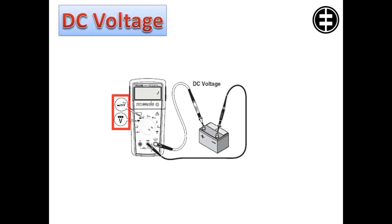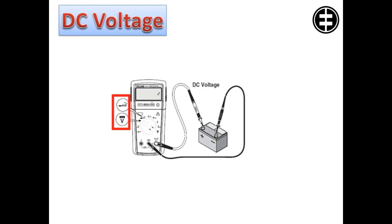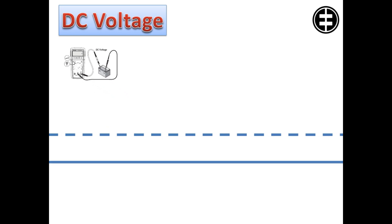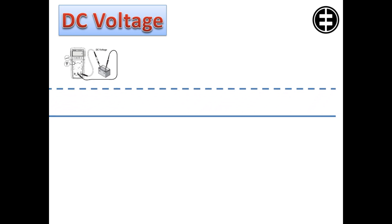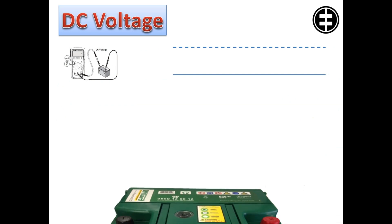Direct current voltage, represented on a digital multimeter by these symbols, travels in a straight line and in one direction only. Commonly produced by sources of stored energy such as batteries.